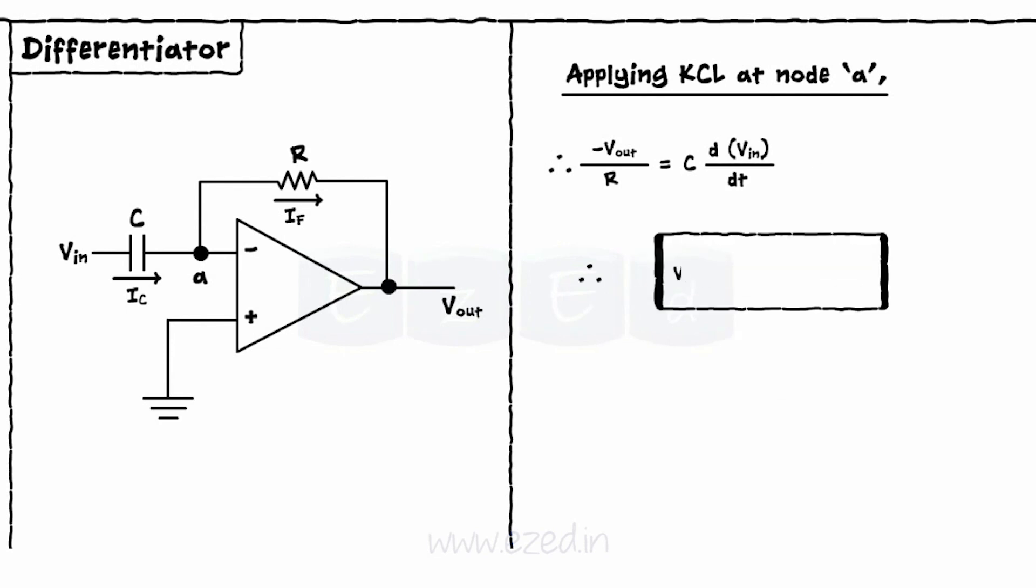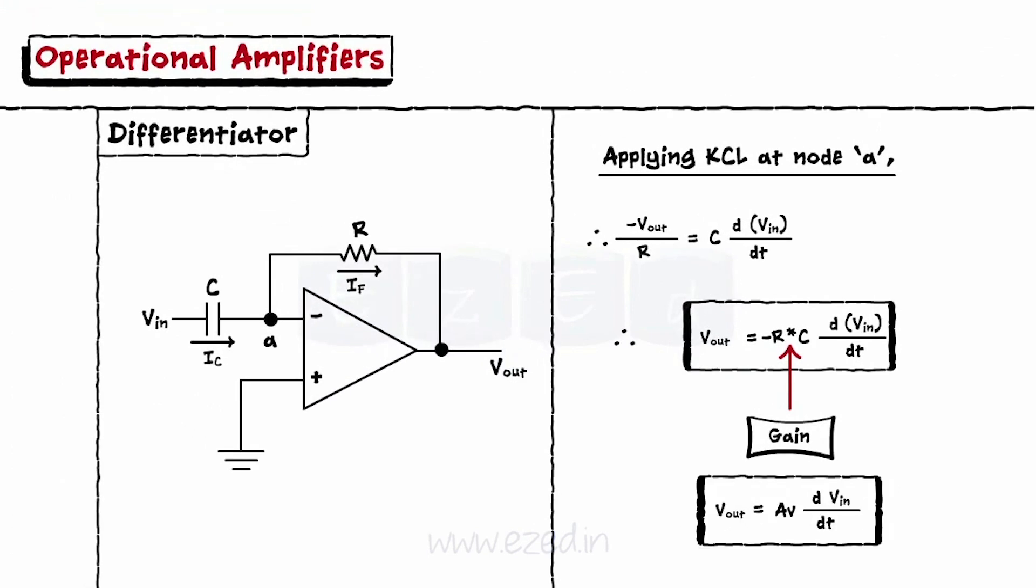Thus, Vout equals minus R into C into dVin by dT. As we can see, if we take R into C as a gain of an amplifier, then the output is the differentiation of an input. Hence, it is called as a differentiator.